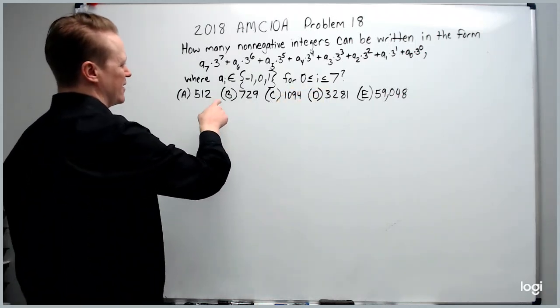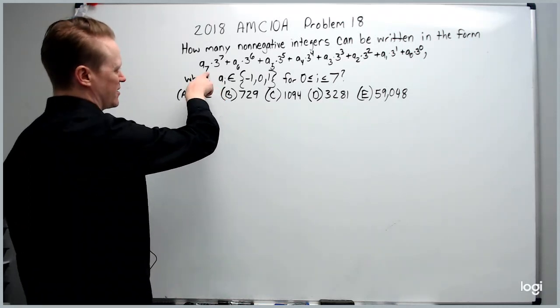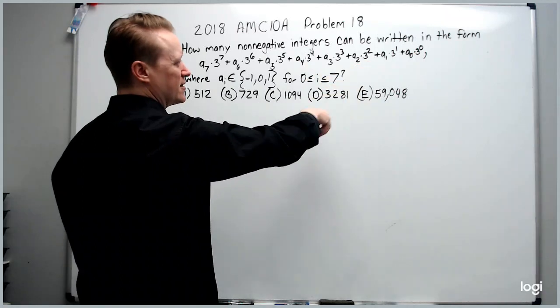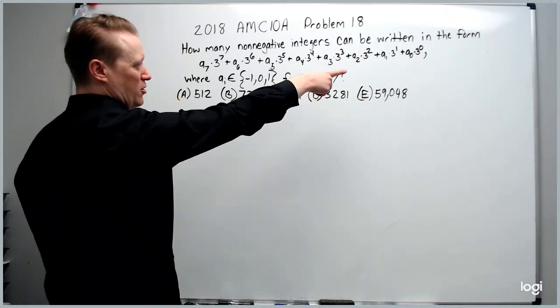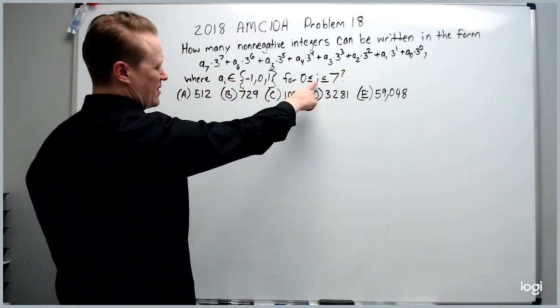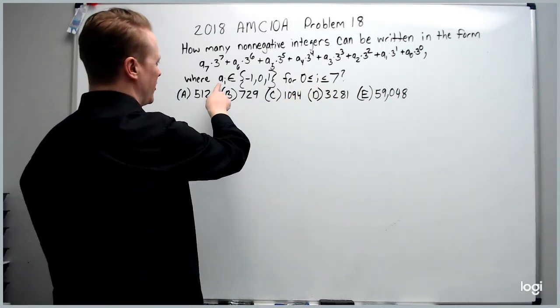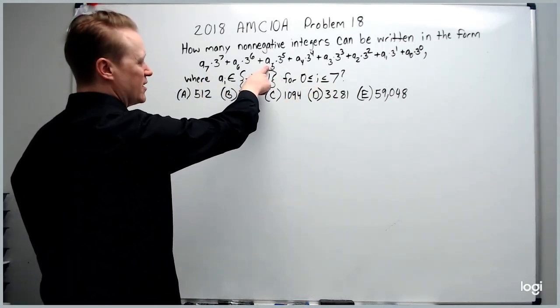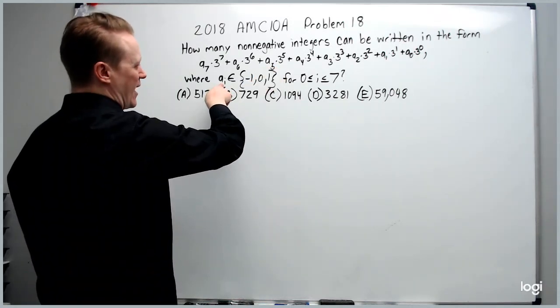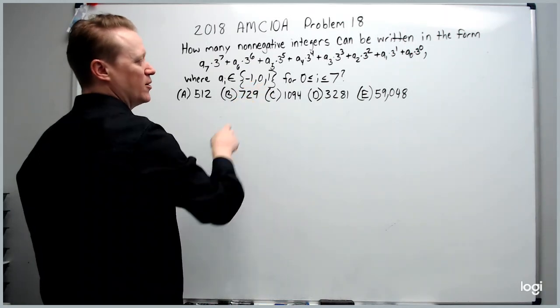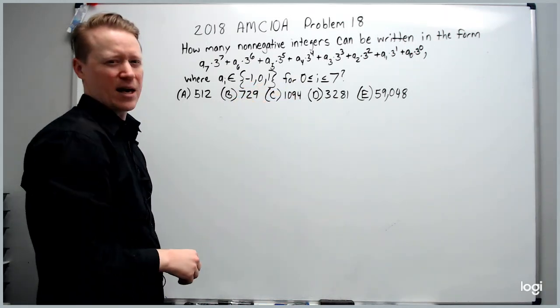We can analyze it. This i is matching the subscripts on each of these numbers, 7, 6, 5, 4, down to 0. So if those numbers range from 0 to 7, that's why it says i ranges from 0 to 7. So for any given one of these coefficients of the power of 3, say a sub 2, it can only have the values negative 1, 0, and 1, and all of them have that property.